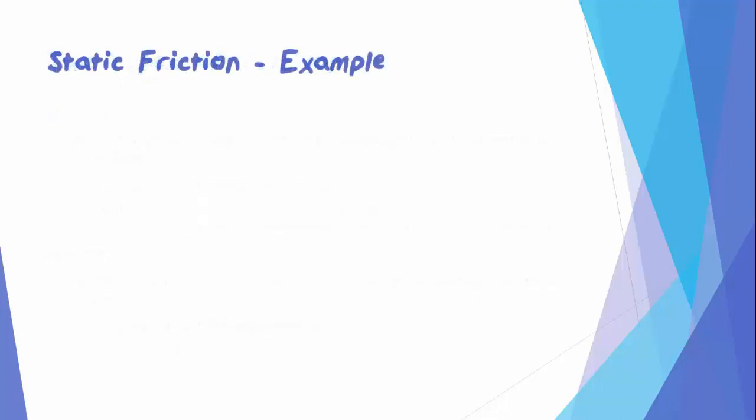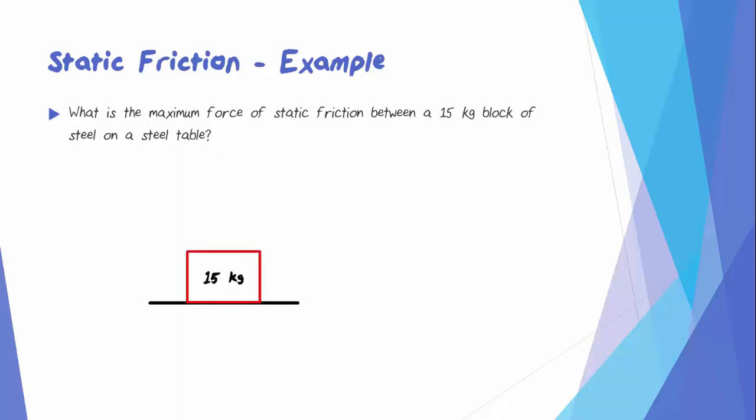Let's take a look at an example of static friction. What is the maximum force of static friction between a 15 kg block of steel on a steel table? We'll start by drawing a free body diagram. We know we have the weight Fg and the normal force Fn. We can calculate that the weight is 147 newtons. This means that the normal force is also 147 newtons. Now we can calculate the friction. We can look up the static coefficient of friction for steel on steel from the reference table to be 0.74. If we multiply that by the normal force, we find that the force of friction is 109 newtons.